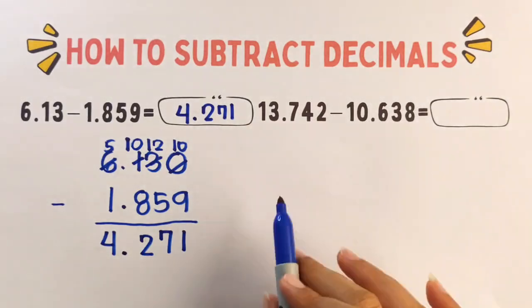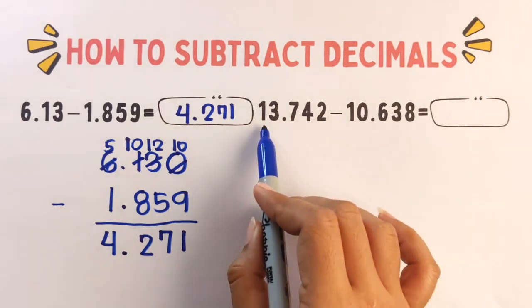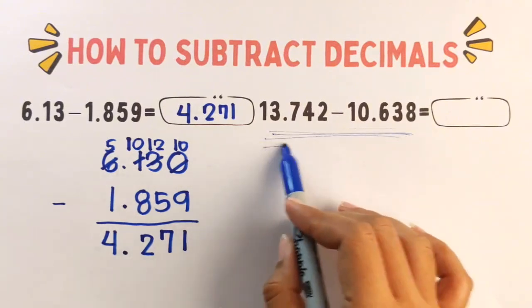Okay. Final tips. Always line up the decimal points. Add 0 to match decimal places. Borrow carefully. And bring the decimal point straight down into your answer.